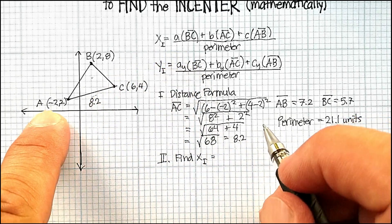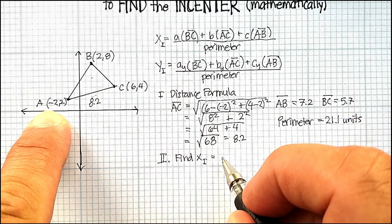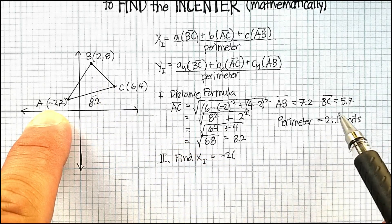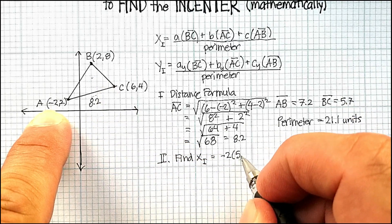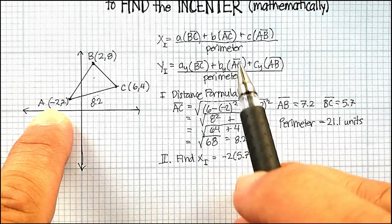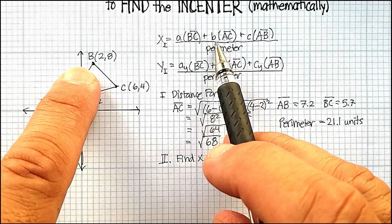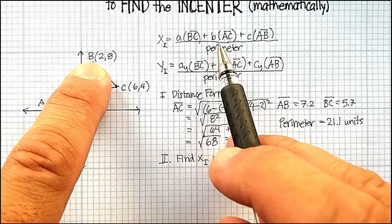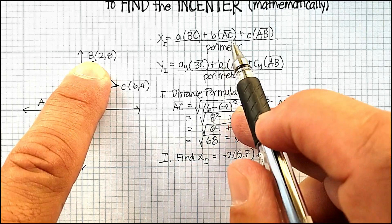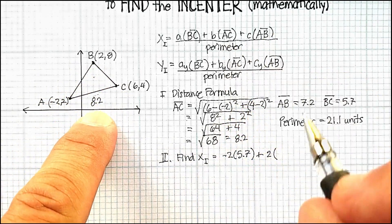Again, we said that was equal to -2 times the opposite side, which in this case was BC, so 5.7, plus value of b, which was x_b, which is 2, times the opposite side, which is AC, which is 8.2.